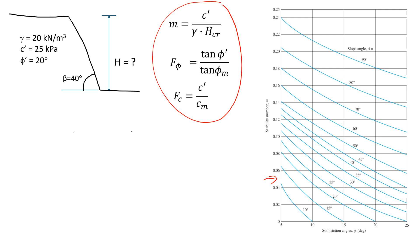The slope we have here has a unit weight of 20 kN per cubic meters, and the soil has effective cohesion and friction angle of 25 kPa and 20 degrees, respectively. What we also need to know is the inclination of the slope face. In this case, it's given as 40 degrees.